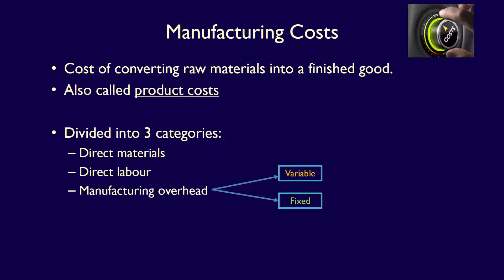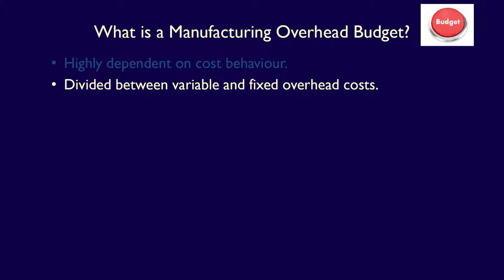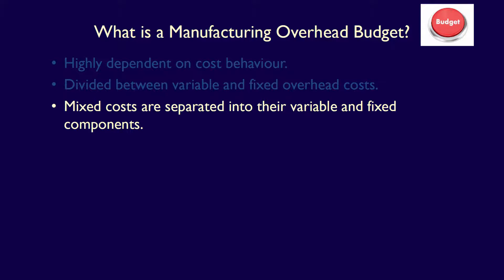It's clear that manufacturing overhead is made up of both variable and fixed costs. When we are costing products, we therefore include direct materials, direct labour, and both variable and fixed manufacturing overhead. The manufacturing overhead budget is dependent on cost behaviour in that overhead costs are divided between variable and fixed overhead costs. If there are mixed manufacturing overhead costs, such as utilities and indirect labour, they are divided into their variable and fixed components using a cost behaviour estimation method, such as high-low or regression analysis.